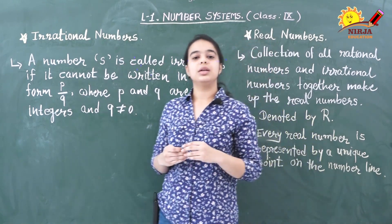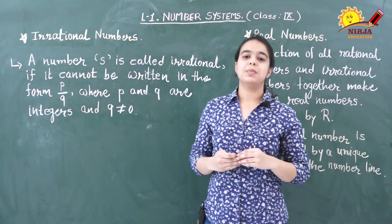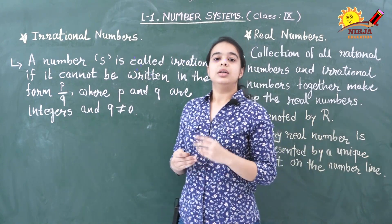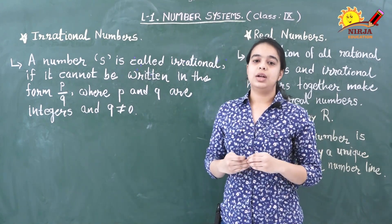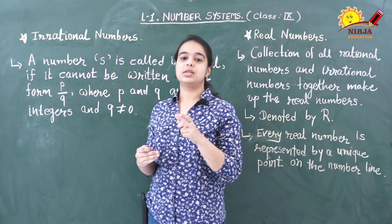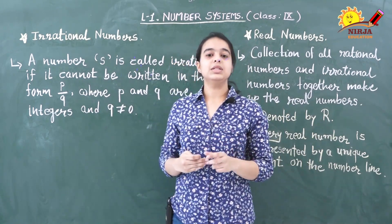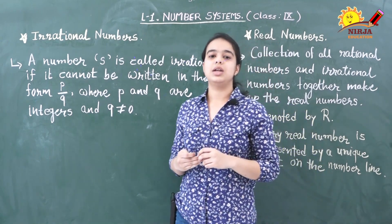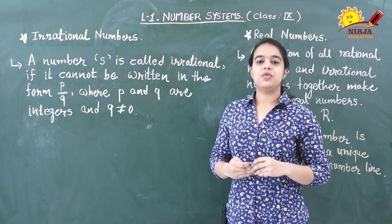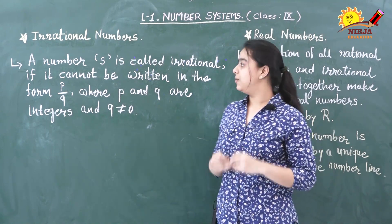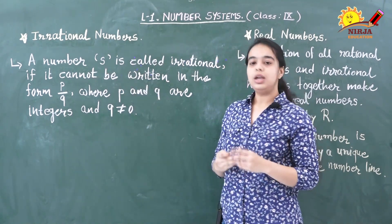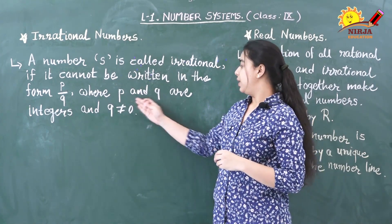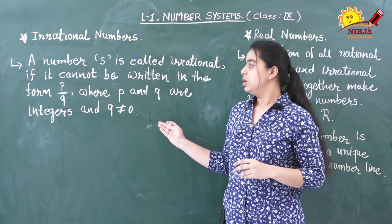The Pythagoreans in Greece, the followers of the famous mathematician Pythagoras, were the first to discover that there are some numbers on the number line which cannot be expressed as a ratio of integers — that means which cannot be written in the form of p by q. These numbers are irrational numbers. A number s is called irrational if it cannot be written in the form of p by q, where p and q are integers and q is not equal to 0.